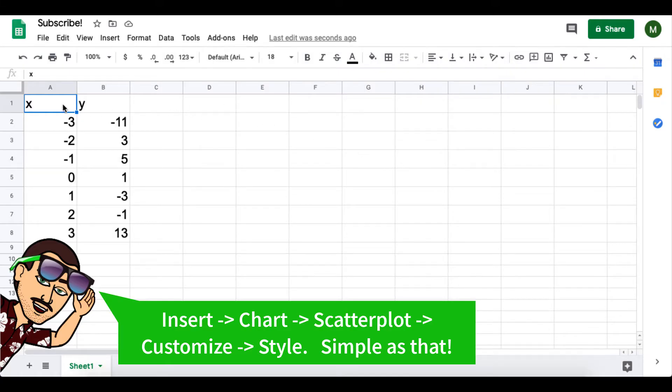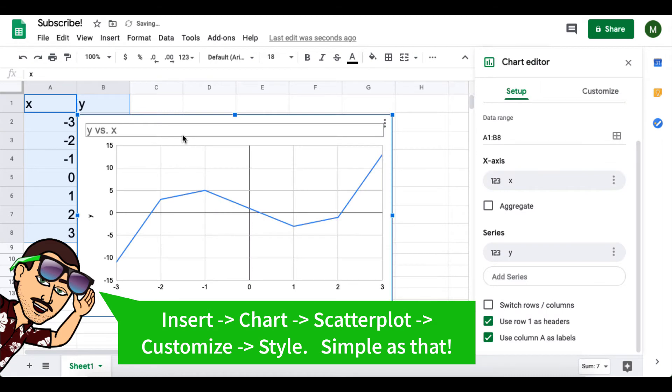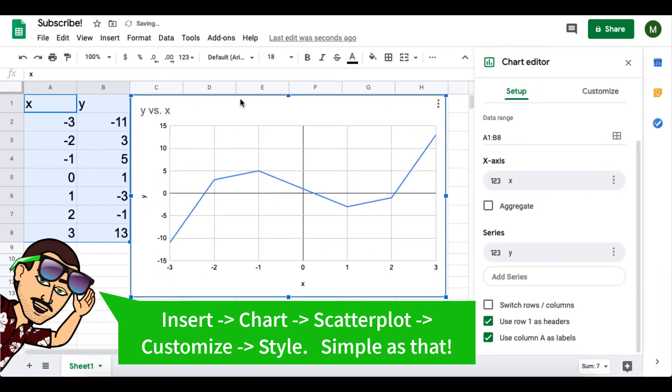It's going to be a quick one today, folks. So we start by highlighting our data and move up to insert. Here we're on Google Sheets. Go to chart, and it defaults to a line chart.